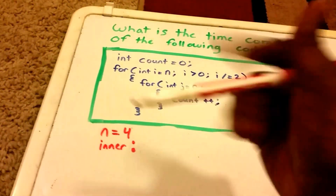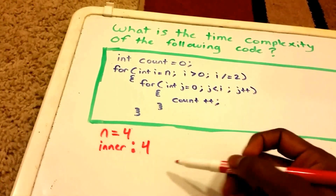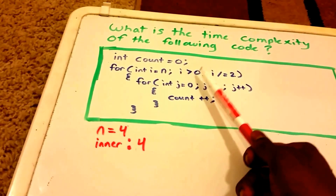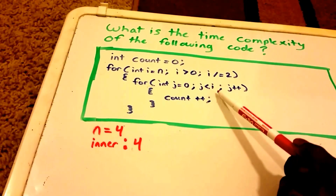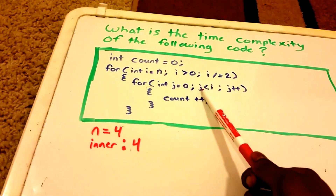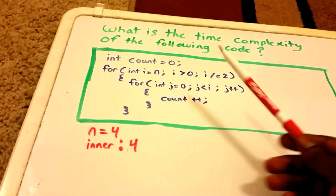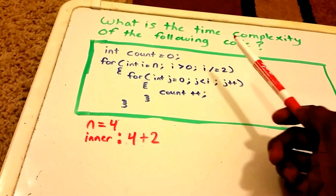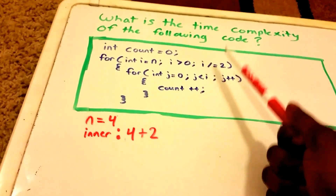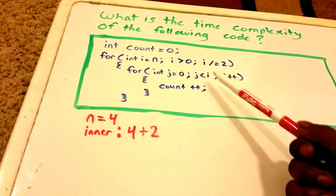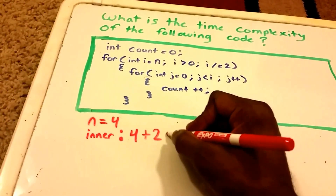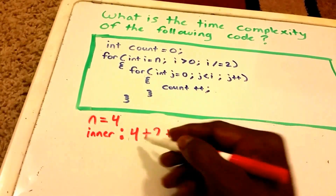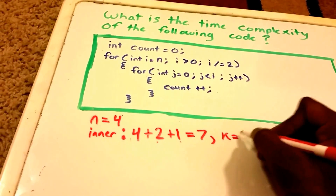The inner loop ran four times in the first pass. Now i equals 4 divided by 2, which is 2. Two is greater than zero, so the inner loop runs two more times. Then i becomes 2 divided by 2, which is 1. One is greater than zero, so the inner loop runs one more time. In total the inner loop ran seven times, and we had three outer iterations, so k equals 3.